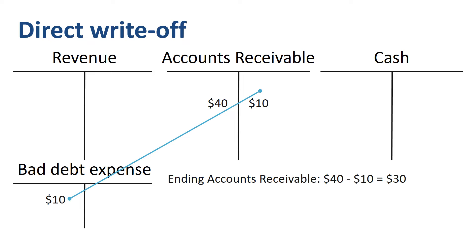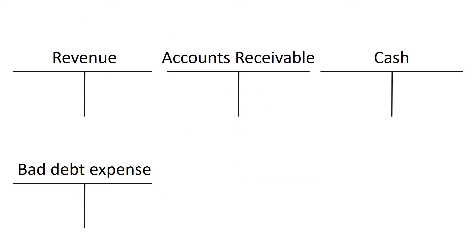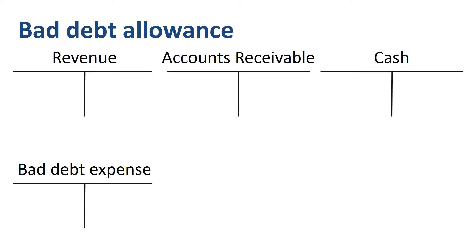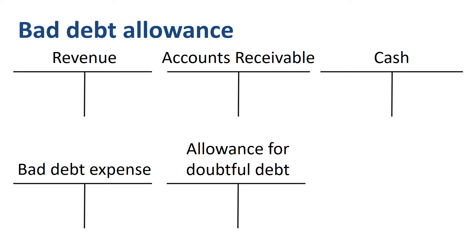They decide that going forward, ABC Company will be more prudent and book an allowance for doubtful accounts on a periodic basis, based on expected credit losses. The debit of the journal entry goes to bad debt expense, and the credit goes to a balance sheet contra account called allowance for doubtful debt.